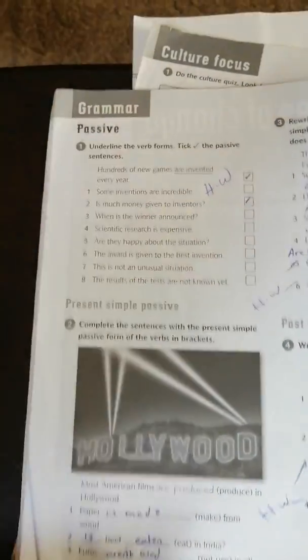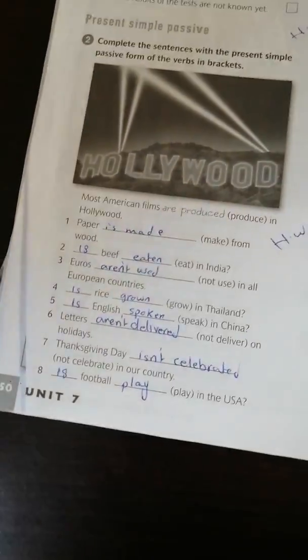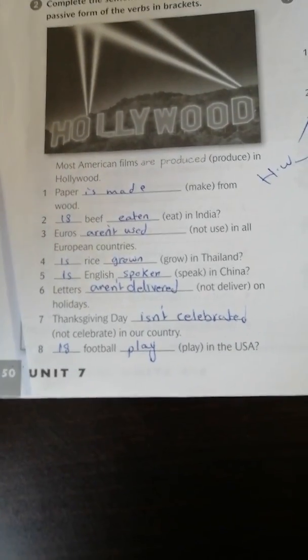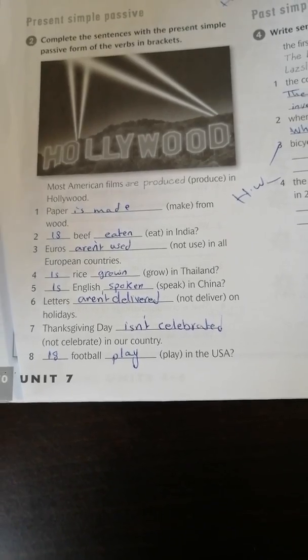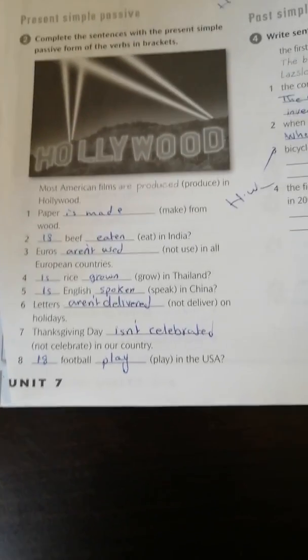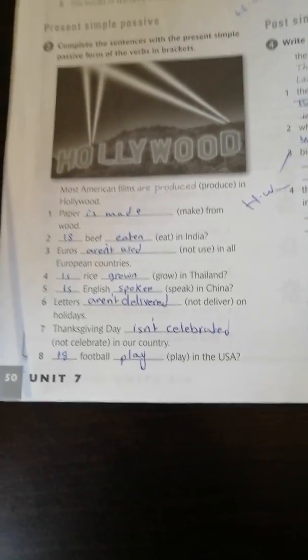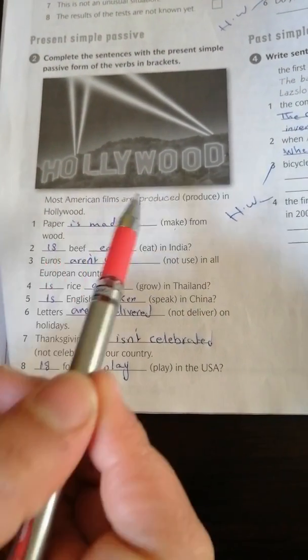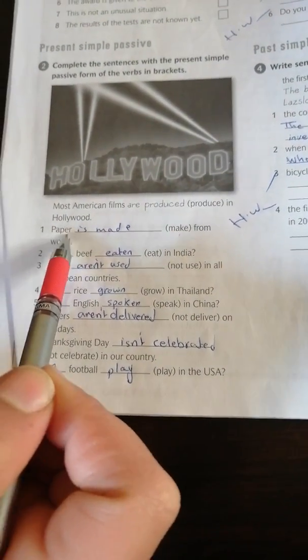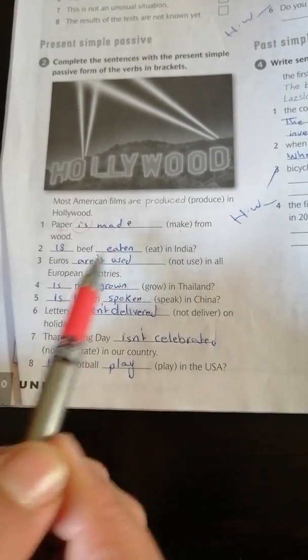Present simple passive exercise. This picture is showing Hollywood. Complete the sentences with the present simple passive form of the verbs in brackets. We have to change it to present simple passive. Paper is singular, it took is, then make, verb 3 of make is made.